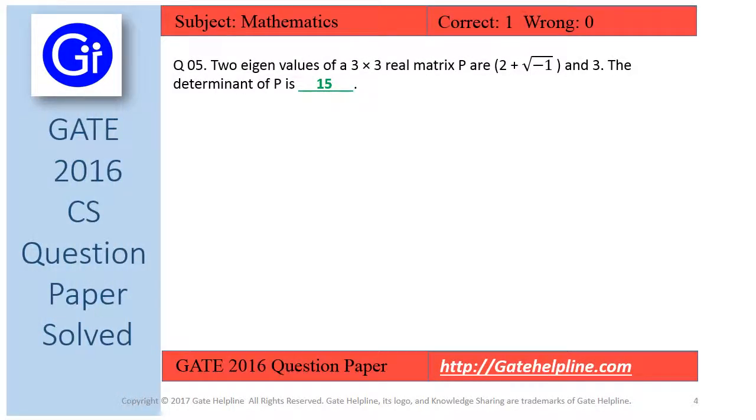So friends, as per our explanation, answer to this question is the value of the determinant of P is 15.